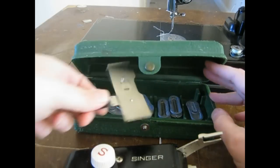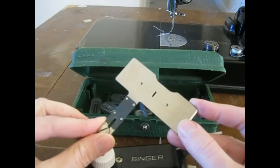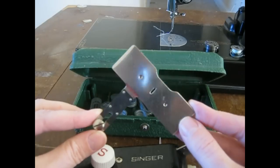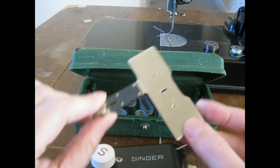You will also have in here a flat, for my machine, this is a Singer Featherweight 221. I don't know if it's going to be like this for other people's machines, but I have this thing that I have to clamp over the feed dogs. It's a little screw on it.